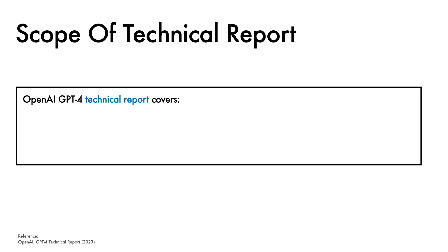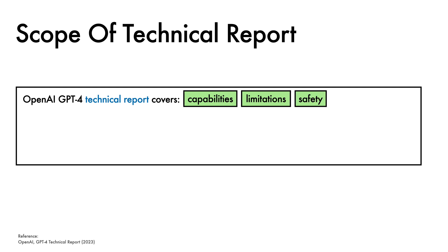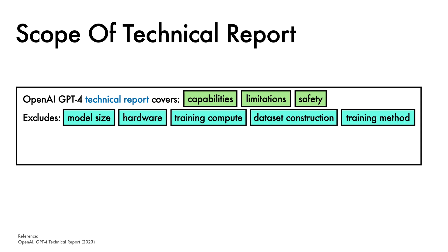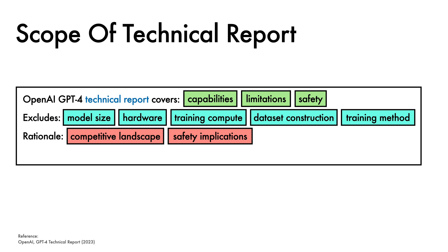The OpenAI technical report describing GPT-4 limits its focus to the capabilities, limitations, and safety of the model. The report excludes details on factors like the model size, hardware, training compute, dataset construction, and training method. The rationale behind these exclusions is twofold: first, there is a competitive landscape for training modern large language models; second, there are safety implications to sharing details of models like GPT-4.